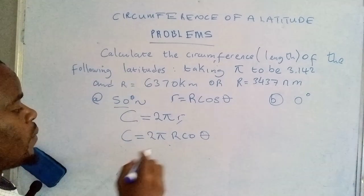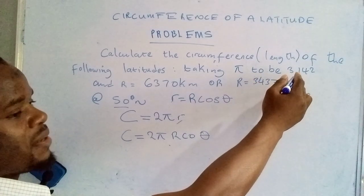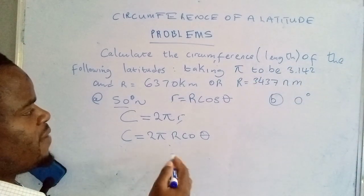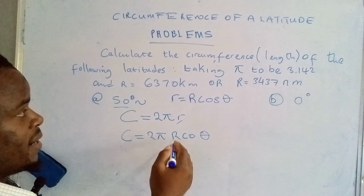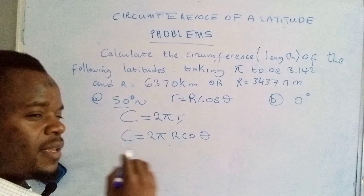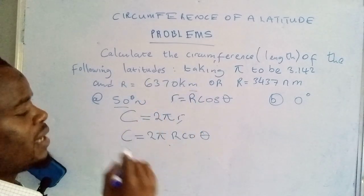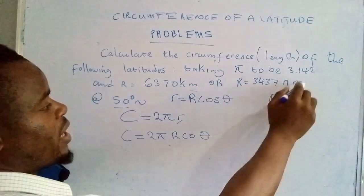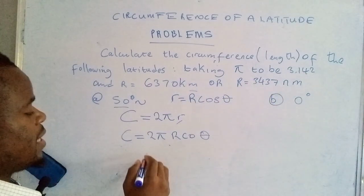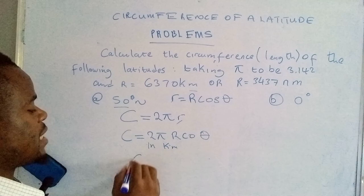And then π has been given in the leading statement, that is 3.142. Then if they say determine the circumference of the latitude in kilometers, we will make use of this value here. If they say determine the circumference of the latitude in nautical miles, we will make use of that value. So now let's do this.